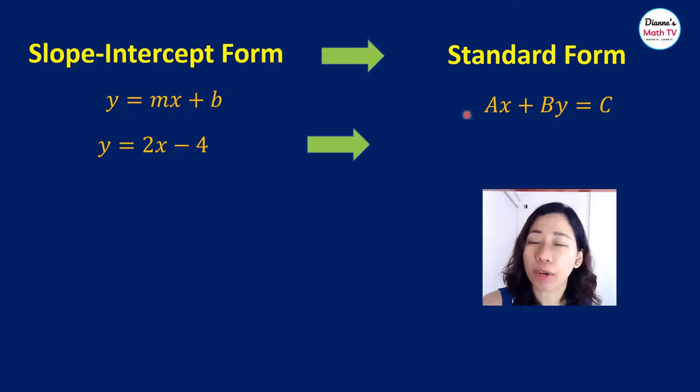We want to write it in standard form. Let us recall again what is standard form. It's just saying that your terms with x and y are on one side of the equation and your constant appears on the other side.